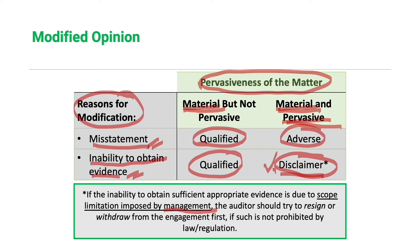The auditor shall also disclaim when, in extremely rare circumstances, there are multiple uncertainties involved and the auditor concludes that, notwithstanding obtaining sufficient and appropriate audit evidence regarding each of the individual uncertainties, it is still not possible to form an opinion on the financial statements due to the potential interaction of those uncertainties and their cumulative effect on the financial statements. In that case, the auditor will also disclaim an opinion.